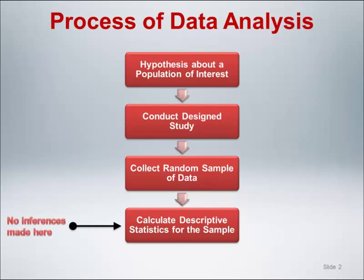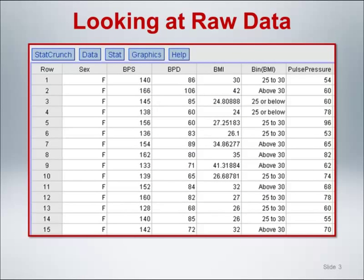It's important to note that at this point in the process we are not focused on making population inferences. Before calculating descriptive statistics, it's important to actually look at the raw data in the data set. Although this basic examination may not provide great insight into understanding structure and patterns in the data, it can provide information about whether the individual level data is accurate and makes sense. One can eyeball the values for different variables in the data set to see if they are generally in line with clinical expectations.